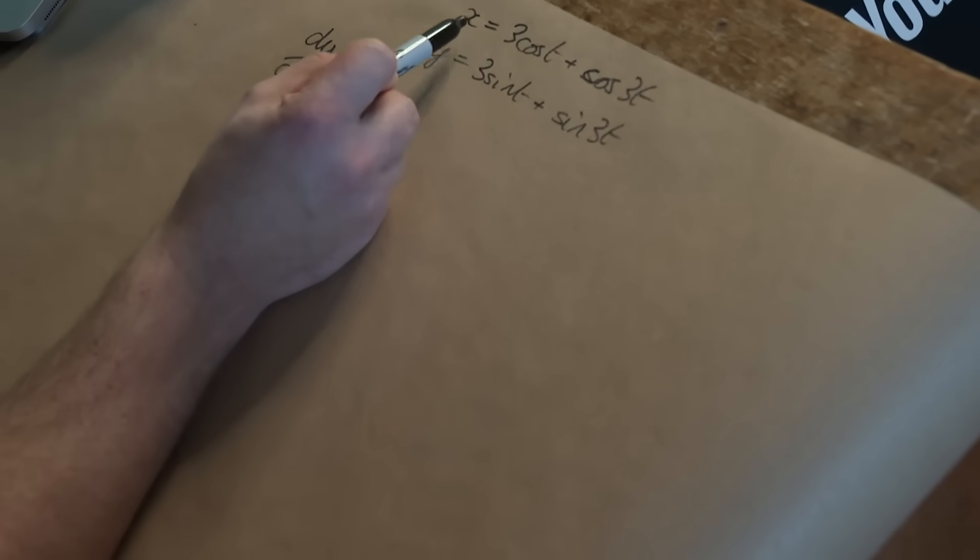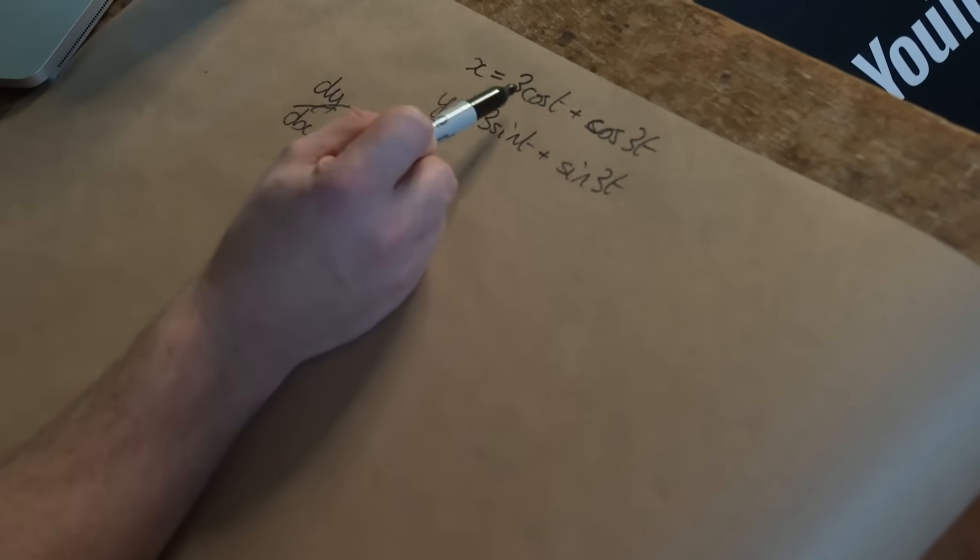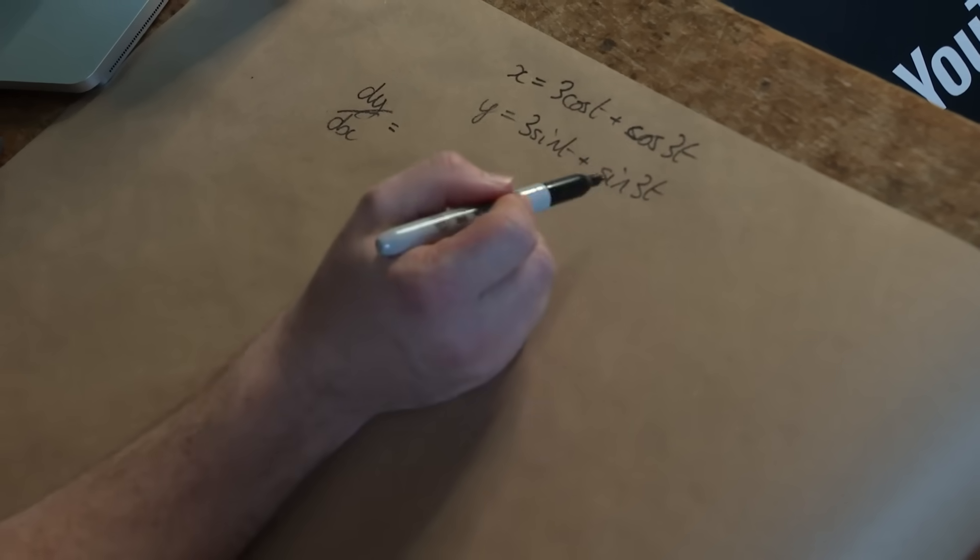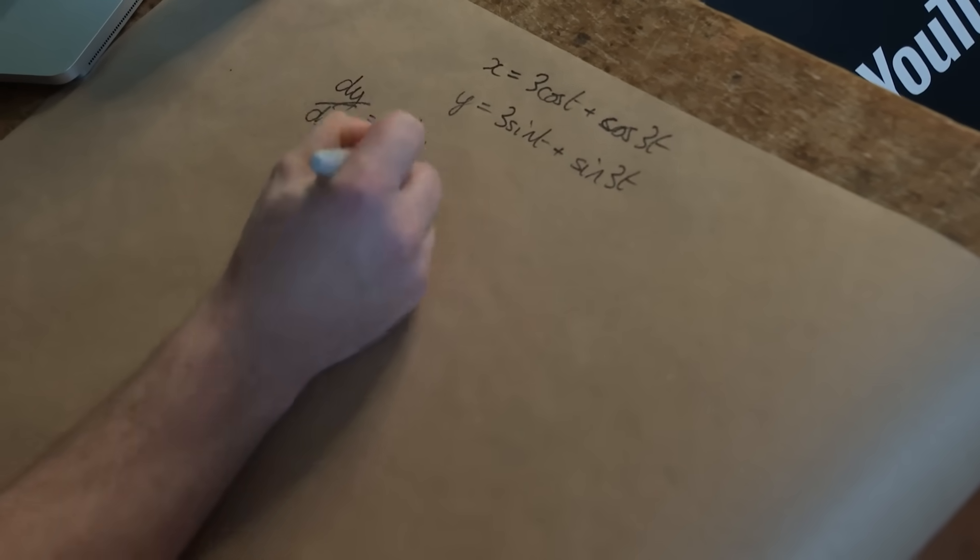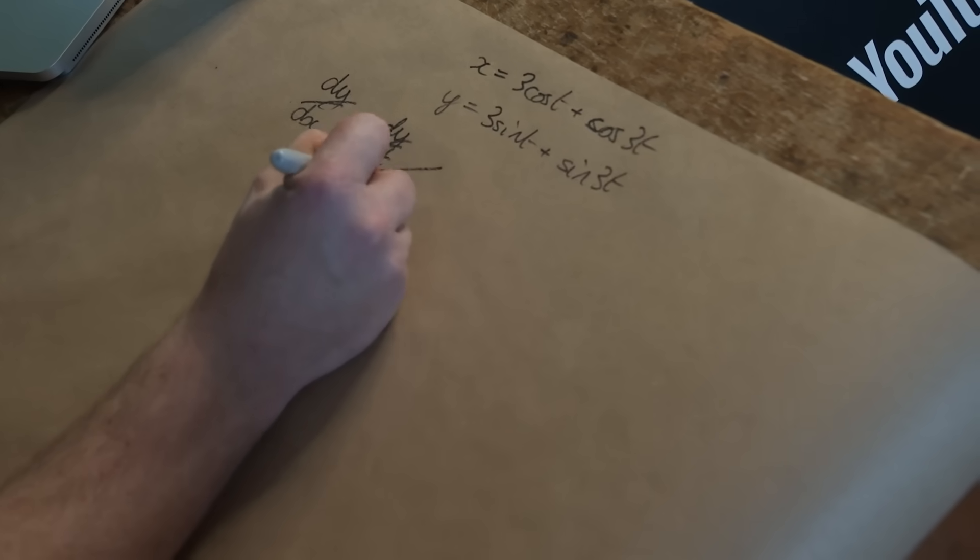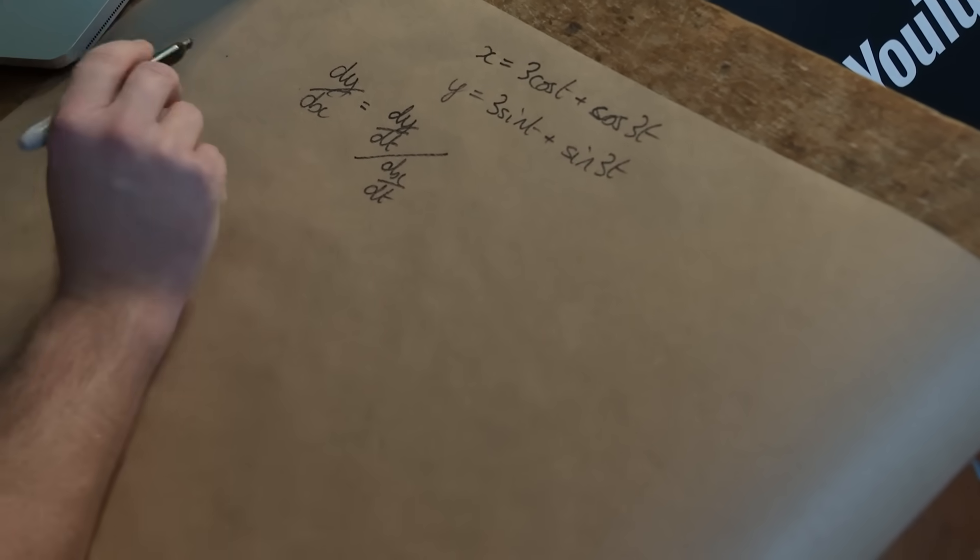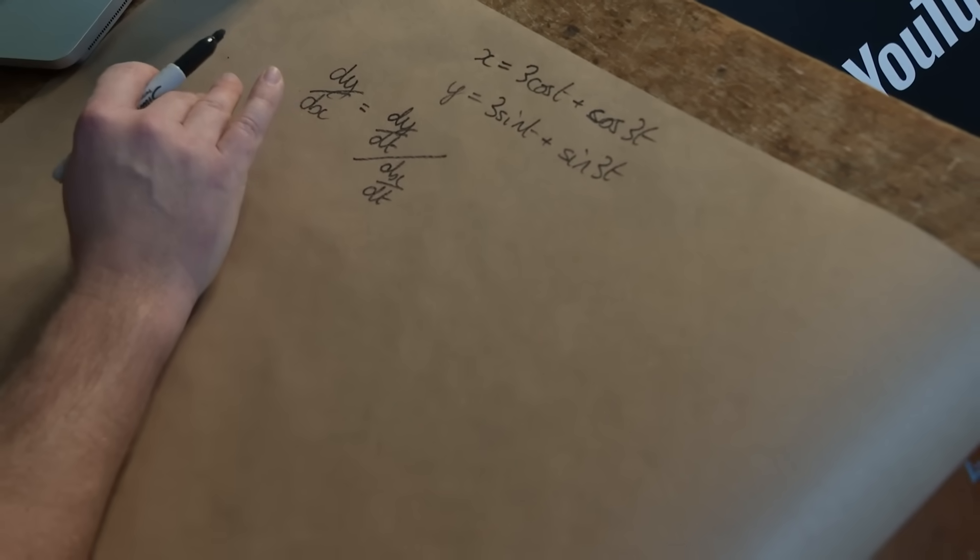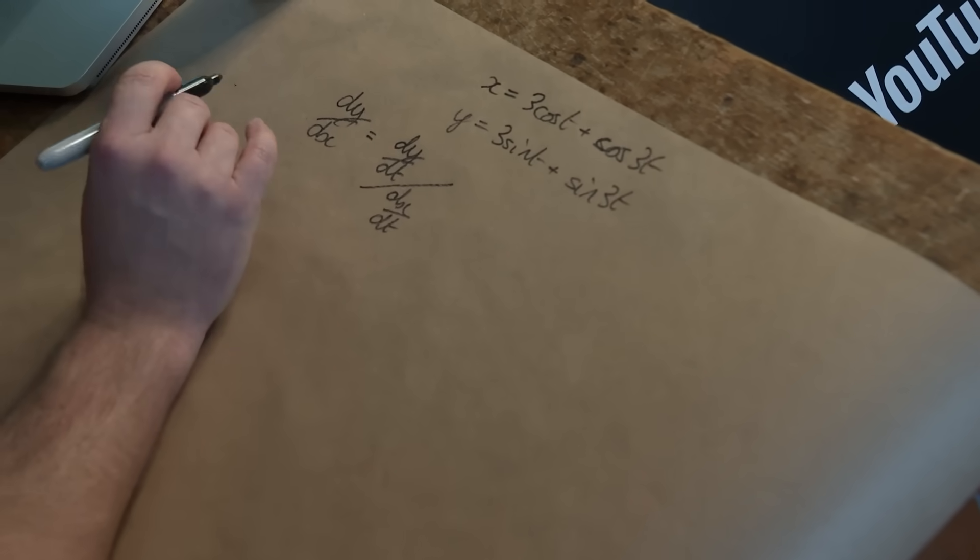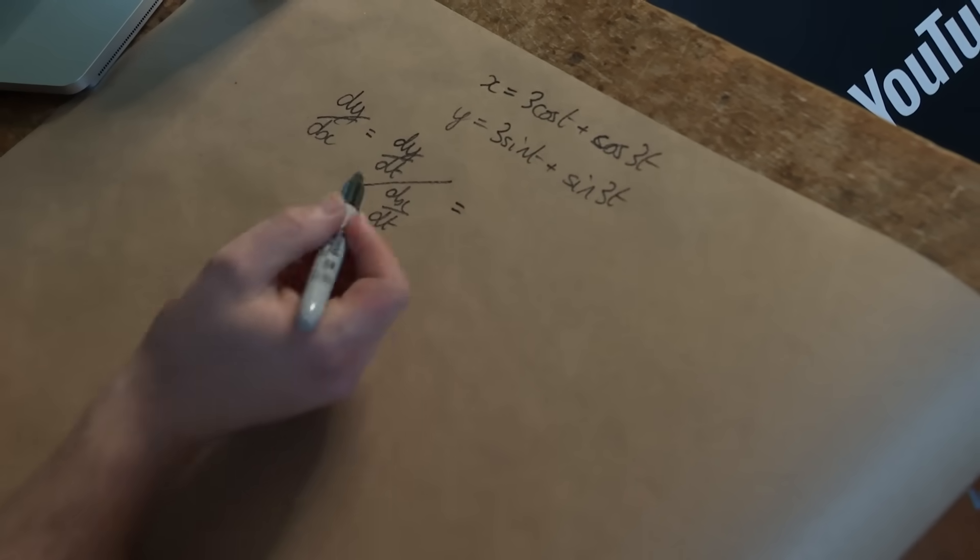I need to differentiate the x coordinate with respect to time and the y coordinate with respect to time and I would get dy by dt if I did that. But I can divide that by dx dt and that would give me, by something called the chain rule, the gradient of the curve. Technical detail, if that's unfamiliar, you can believe it or you can go and learn some math. But I'm going to do the derivatives. I'm going to do this quite quickly.